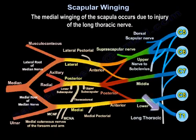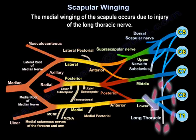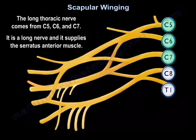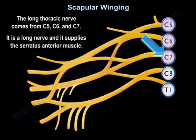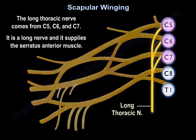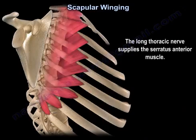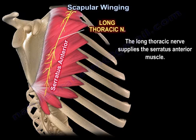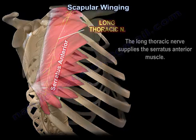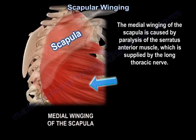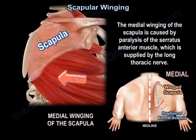The medial winging of the scapula occurs due to injury of the long thoracic nerve. The long thoracic nerve comes from C5, C6, C7. It is a long nerve, and it supplies the serratus anterior muscle. The medial winging of the scapula is caused by paralysis of the serratus anterior muscle, which is supplied by the long thoracic nerve.